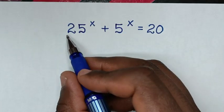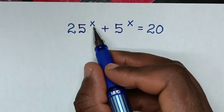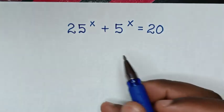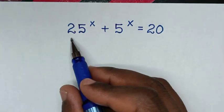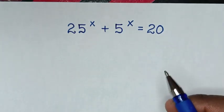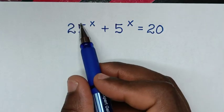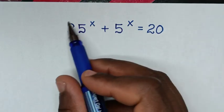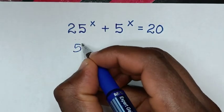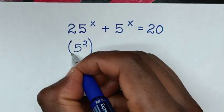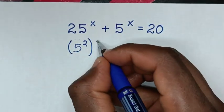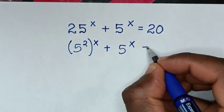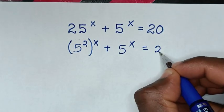Hello. How to solve 25 power of x plus 5 power of x is equal to 20, to find the value of x from this equation. First, from here, this 25 — to have the same base of 5 — 25 is the same as 5 squared, then bracket power of x, plus this 5 power of x, is equal to 20.